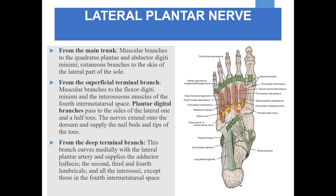The lateral plantar nerve has a main trunk, a superficial terminal branch, and a deep terminal branch. From the main trunk, muscular branches supply the quadratus plantae and abductor digiti minimi, and cutaneous branches supply the skin of the lateral part of the sole. The superficial terminal branch supplies the flexor digiti minimi and the interosseous muscle of the fourth intermetatarsal space, and gives plantar digital branches to the lateral one and a half toes, including the nail bed and dorsal surface of the terminal phalanges. The deep terminal branch curves medially with the lateral plantar artery and supplies the adductor hallucis, the second, third, and fourth lumbrical muscles, and the first, second, and third interosseous muscles.